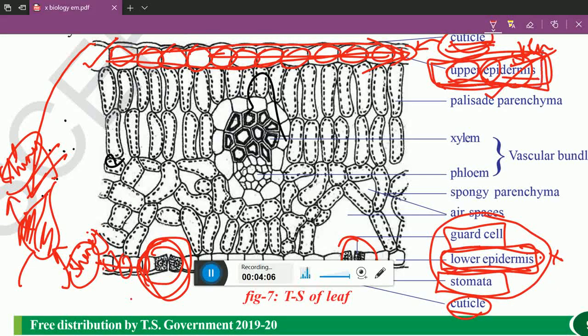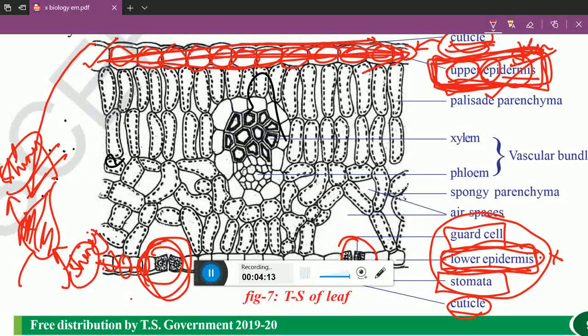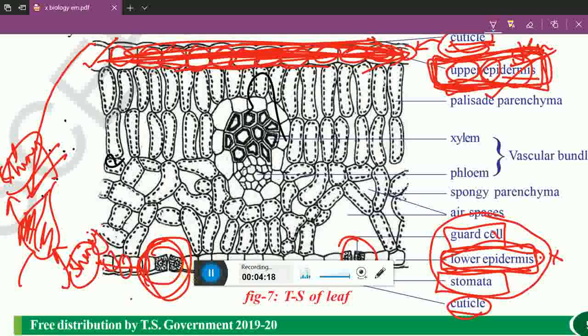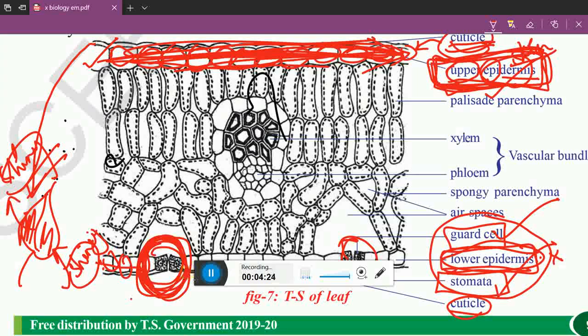They will ask in your SSC, what is the difference between upper epidermis and lower epidermis. Upper epidermis is continuous without any interruptions. But lower epidermis, it has guard cell and stomata. Here, you can see this is the guard cell. Inside the stomata is present.